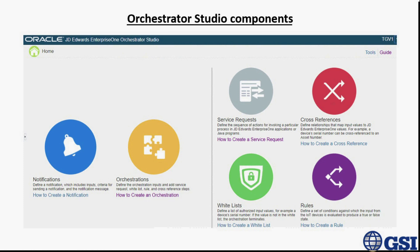Orchestrator is based on six components. Orchestration is the master component where the orchestration entries are defined and components added. This has a unique name and a description. Service request is a sequence of actions to evoke a particular process. This can be a JD Edwards process or an external one. There are seven types of services: form request, data request, messages, connector, custom services, watchlist, and report.